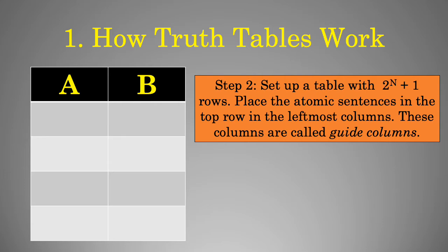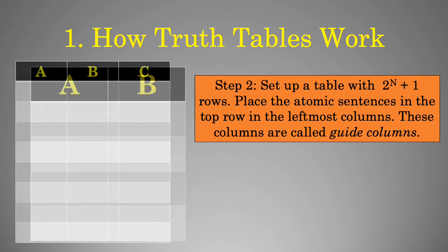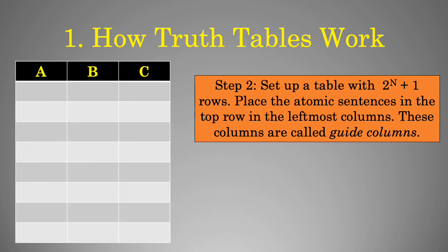In this case, we have two atomic sentences, so we have two guide columns. We also need to figure out how many blank rows to insert underneath A and B. We do this by taking two and raising it to the nth power. So here n equals two, so two to the second power is four — and that's why you see four blanks underneath A and B. If we had three simple propositions, it would be two to the third power, or eight blanks. And if you had four, it would go up to 16, and five up to 32, and so on.